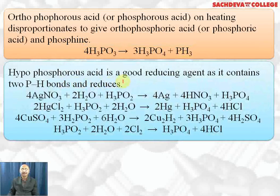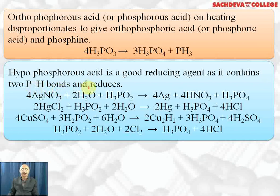Hypophosphorous acid is a good reducing agent as it contains two P-H bonds. It is a monobasic acid, so it contains one P-OH bond and two P-H bonds, and due to these two P-H bonds it acts as a reducing agent.